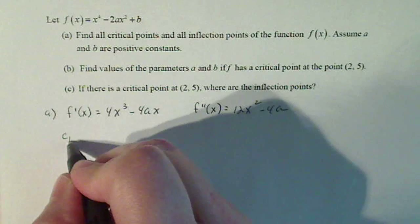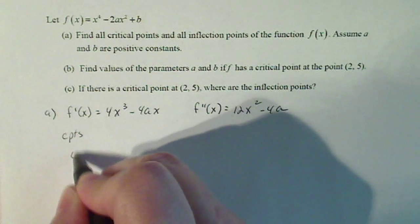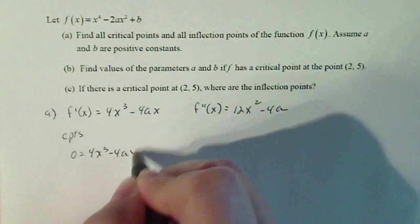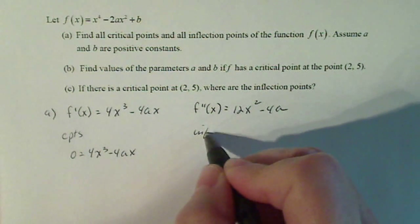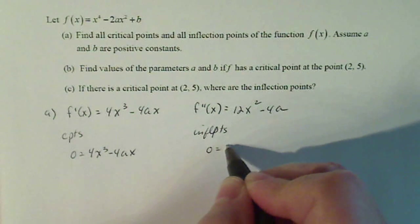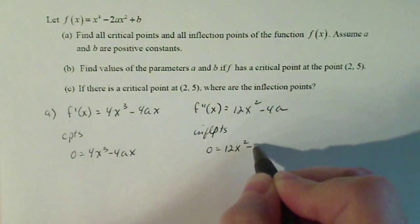Now to find the critical points, I solve the equation zero equals 4x cubed minus 4ax. And then similarly for the inflection points, I need to solve zero equals 12x squared minus 4a.